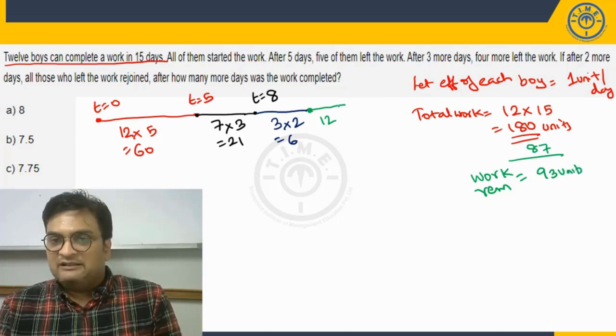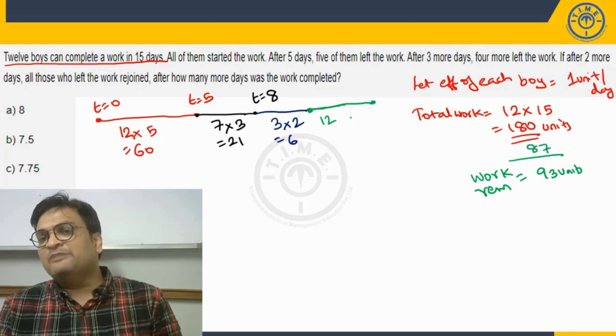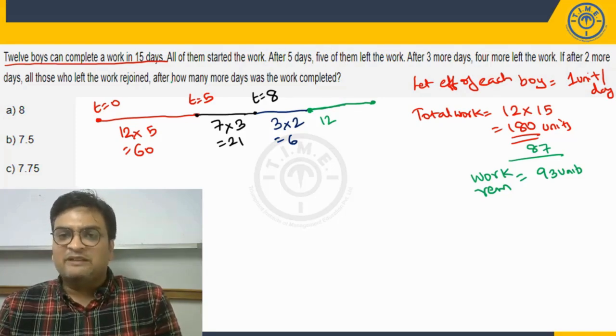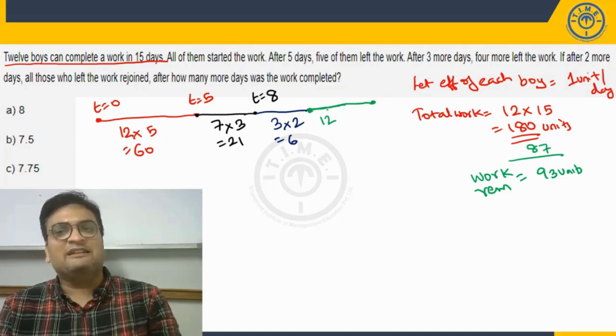So here this group of twelve again which have come back together will have to complete ninety-three units. Now how long will they take? Now the question is after how many more days was the work finished. So we have to basically find the time taken for this green zone.